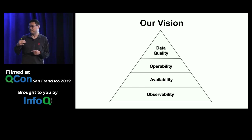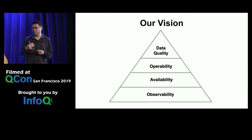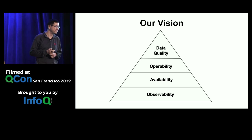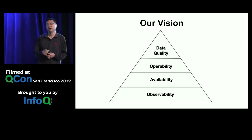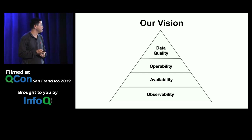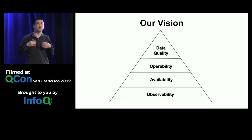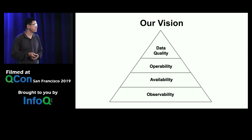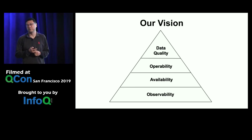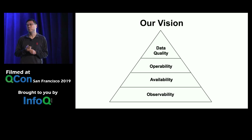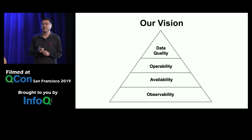Once you have satisfied observability, availability, and operability, here comes the crown jewel: data quality. You want to establish key indicators for your data quality, and possibly some enforceable SLOs. For this talk, I'll be focusing on data transport quality — specifically data loss rate, duplicate rate, and end-to-end latency.